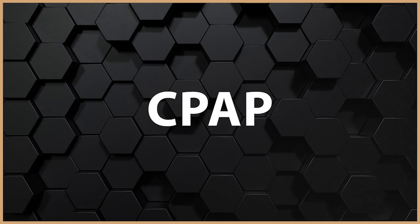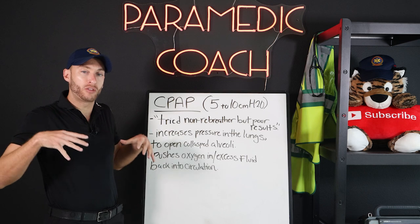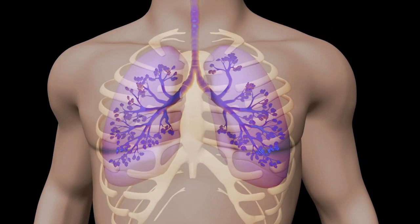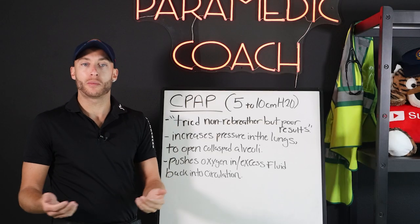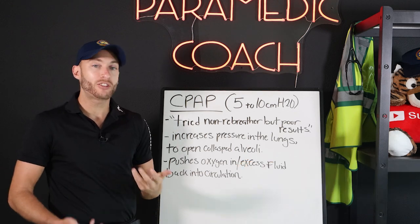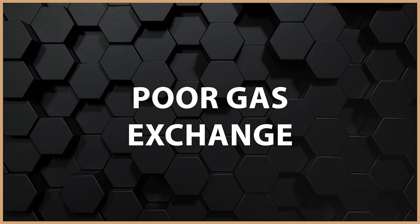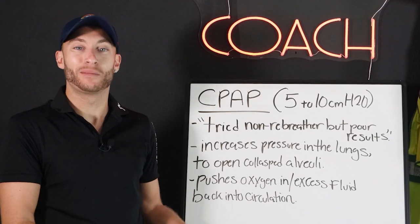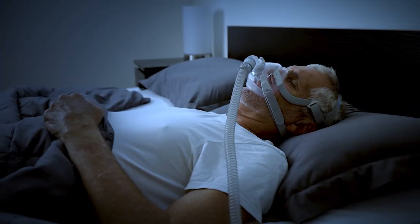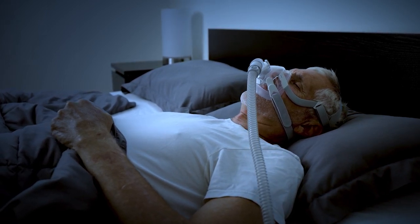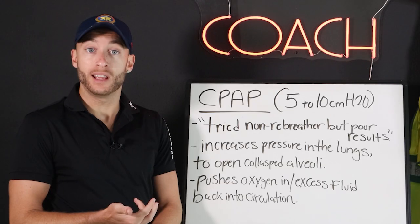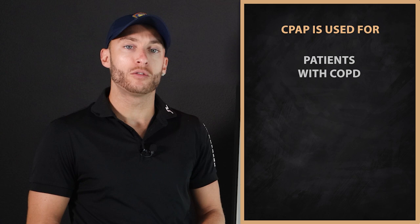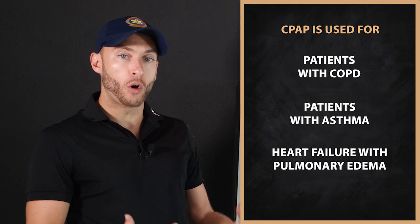CPAP is continuous positive airway pressure. It increases the pressure going down into the patient's lungs. The alveoli at the base of the lungs is where oxygen enters the body. For a patient in heart failure with fluid in the alveoli, gas exchange is poor. CPAP pushes pressure down to open up collapsing alveoli, get oxygen into the body, and push excess fluid back into circulation. The primary use case is pulmonary edema — fluid in the lungs that shouldn't be there. It can also help COPD and asthma patients open up their lungs.